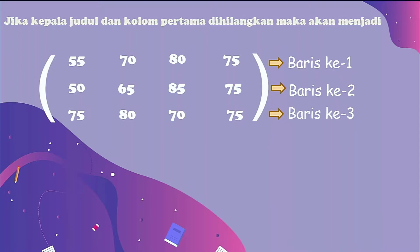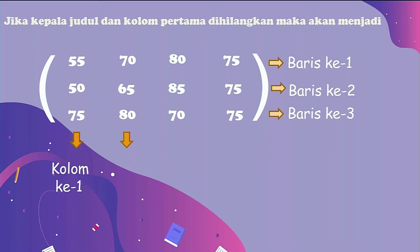Kalau horizontal disebut dengan baris. Sekarang untuk yang vertikal — vertikal itu berarti dari atas ke bawah. Di situ ada 55, 50, 75. Dia berada pada kolom pertama, maka dia disebut dengan kolom ke-1. Berikutnya, untuk angka 70, 65, 80, dia disebut dengan kolom ke-2. Kita bacanya ke bawah: 80, 85, 70 disebut dengan kolom ke-3.